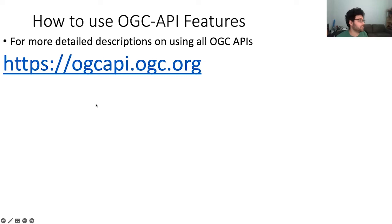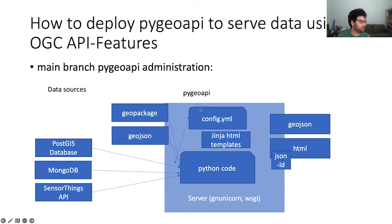There are more detailed descriptions for all of this at ogcapi.ogc.org, but I just wanted to give you a flavor of how nice, easy, and developer-friendly it is to use on the client side. So how do you deploy this server? The main branch of PyGeoAPI works like this: there's a Python server environment with Python code in it — Flask, Starlette, and even Django now possibly.